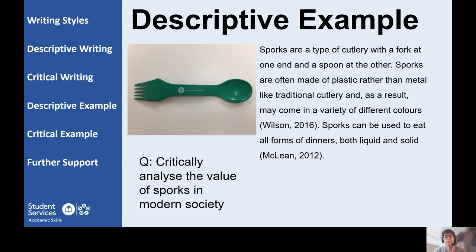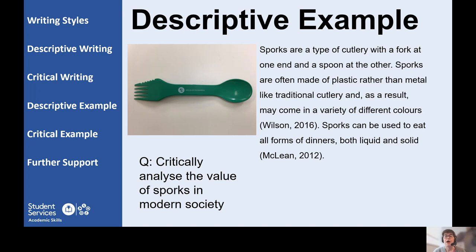I wanted to show you a couple of examples to demonstrate the difference between descriptive and critical writing. So this is an example of descriptive writing. The question actually asks you to critically analyse the value of sporks in modern society, but what the person has done is just given a description of sporks — what a spork is, that it's a type of cutlery with a fork at one end and a spoon at the other, what they're made of, that they come in different colours, and how they're used. They've used references but they haven't critically analysed; they've merely described what a spork is.